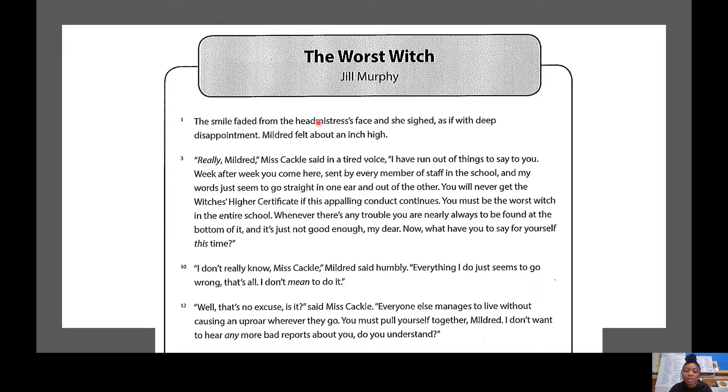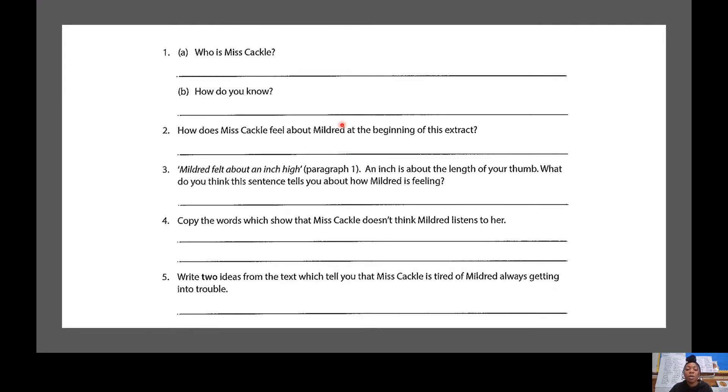We know that there's Mildred. It looks as if Miss Cackle might be a teacher. What kind of teacher? It does say in the first paragraph. OK, so what I'm going to do, I'm going to read the questions to you. If you want to read it yourself, that's fine. Just pause the video now and answer them. Otherwise, pause the video after each question that I read. So, question number one, who is Miss Cackle? B, how do you know? Number two, how does Miss Cackle feel about Mildred at the beginning of this extract?